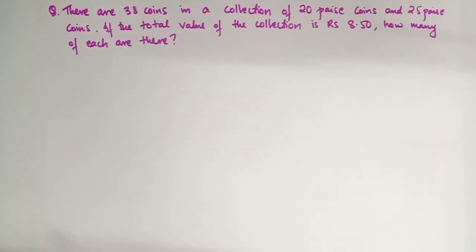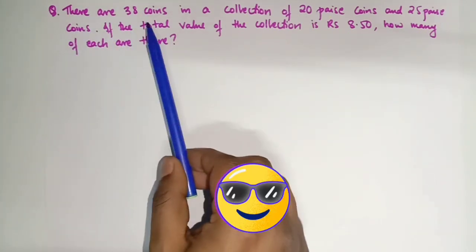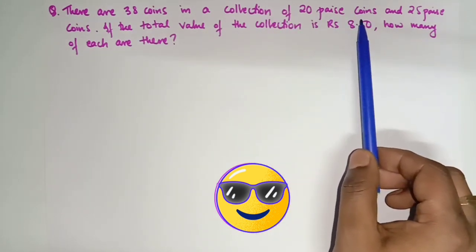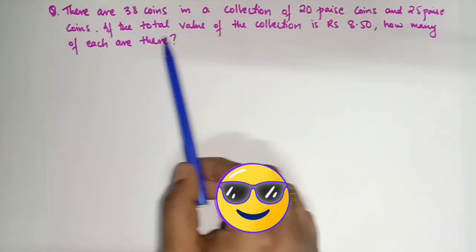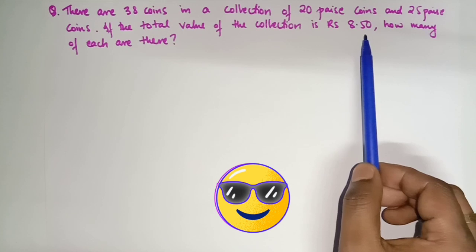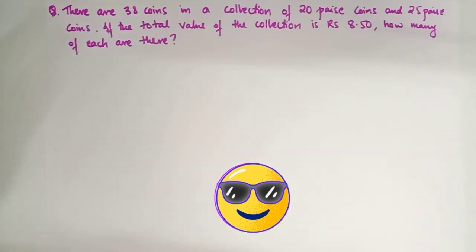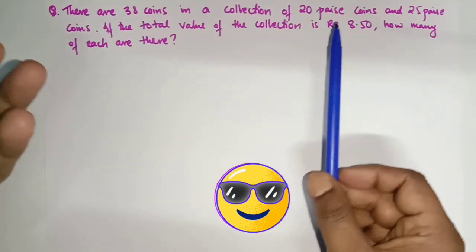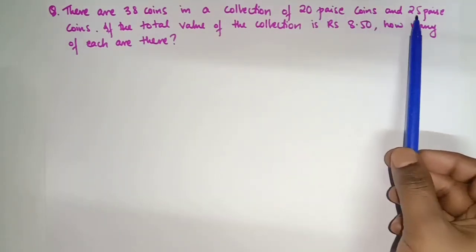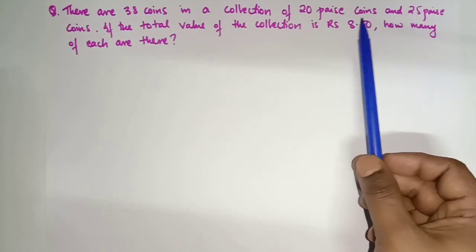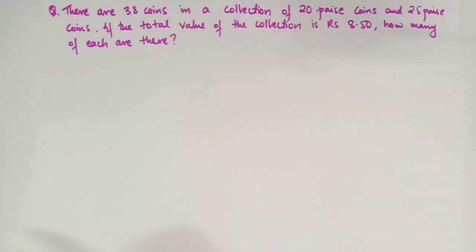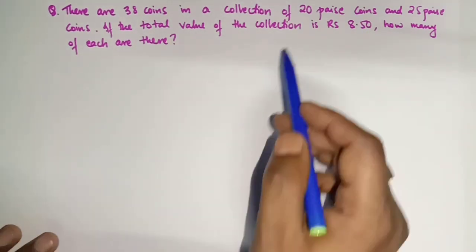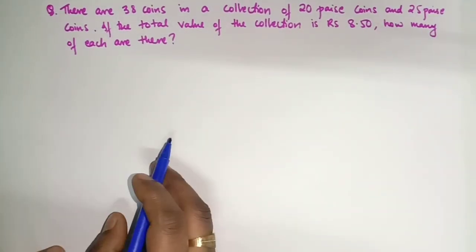Here we have one of the very important questions. There are 38 coins in a collection of 20 paise coins and 25 paise coins. The total coins are 38 and the total value of the collection is 850 paise. Suppose you have a box with 38 coins — only 20 paise and 25 paise coins — and the total money is 850 paise. We don't know how many of each type there are.